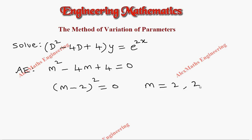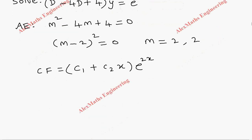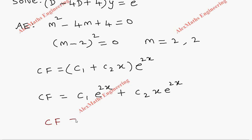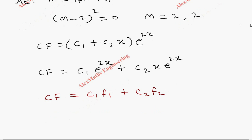From this we get two values for m — both are 2. The complementary function is (c1 plus c2x) into e to the power 2x, which expands to c1 e^(2x) plus c2 x e^(2x). We compare this with the general form c1 f1 plus c2 f2, so f1 is e^(2x) and f2 is x e^(2x).